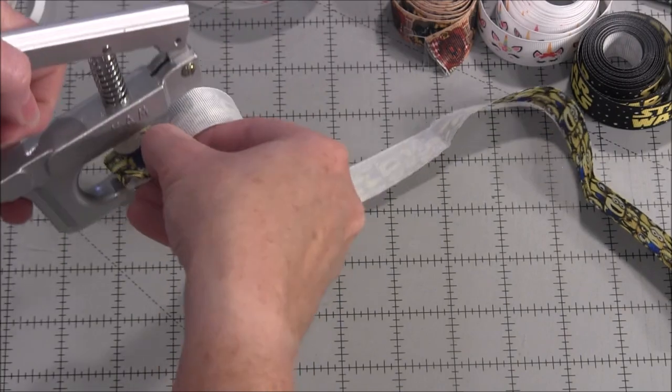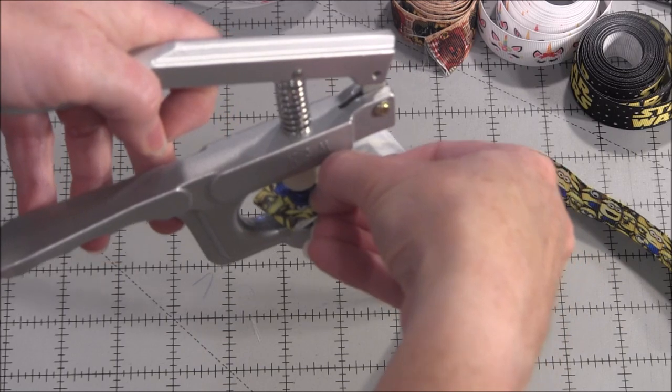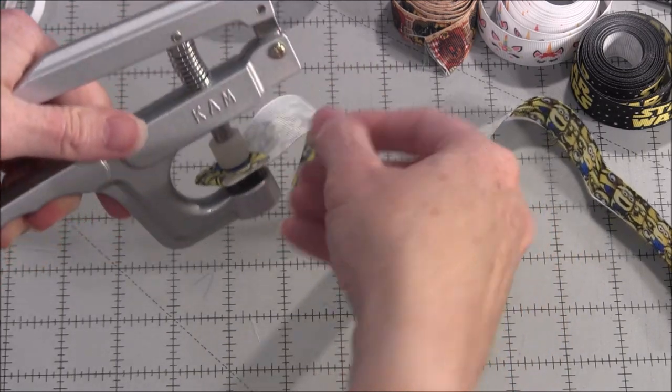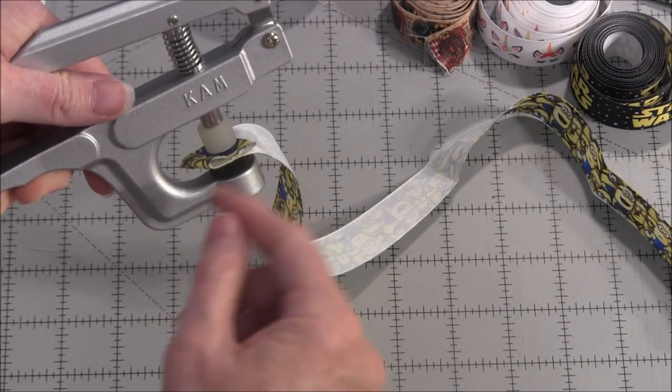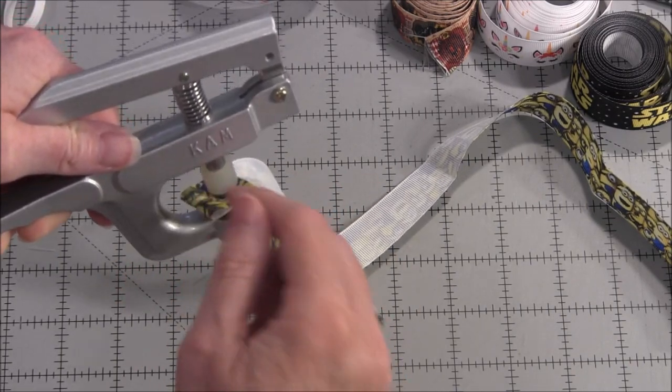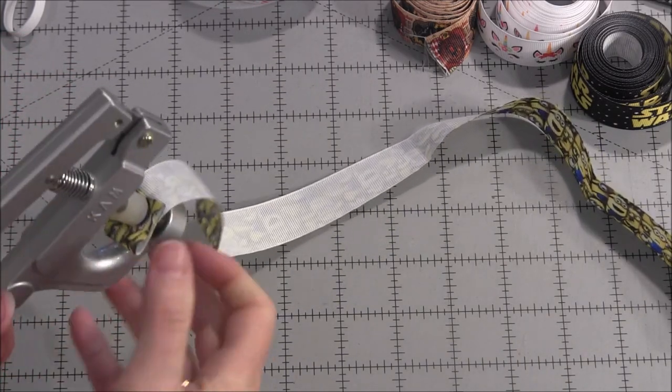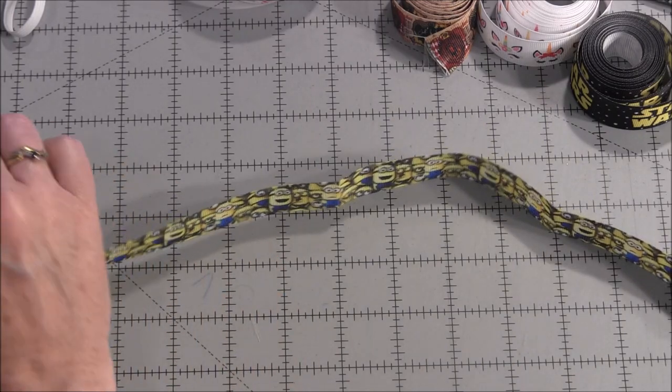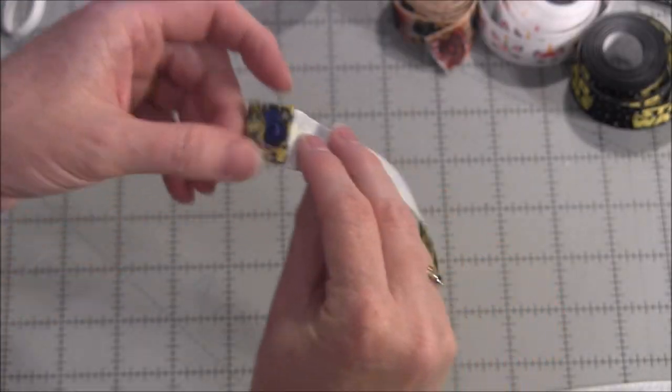With your cam snap pliers, you slide it into the snap hole. There's like a little bowl and you slide the flat part in, then cover it up. Make sure you press down firmly and straight. There, you've installed one cam snap.